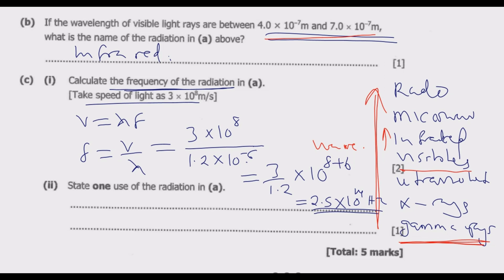Let us move to roman numeral two: state one use of the radiation in A, which is infrared. We have identified this one to be infrared, so what's the use of infrared?